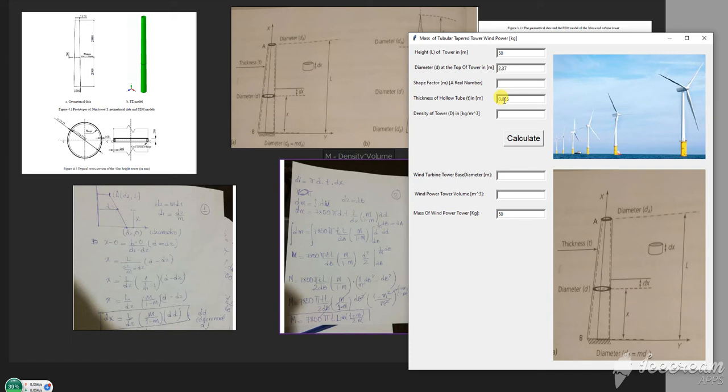So the shape factor is equal to or greater than 1. If it's equal to 1, we end up having a cylindrical hollow tube. Let's calculate for that case.